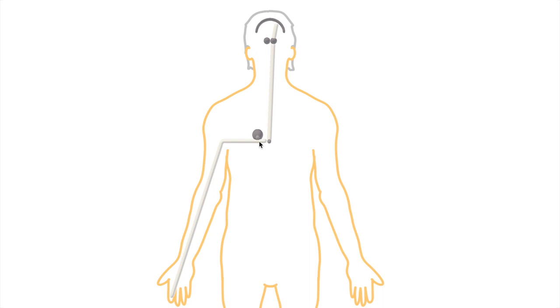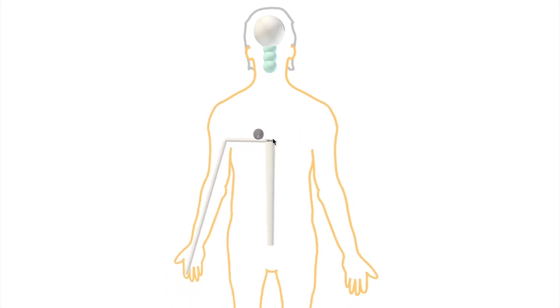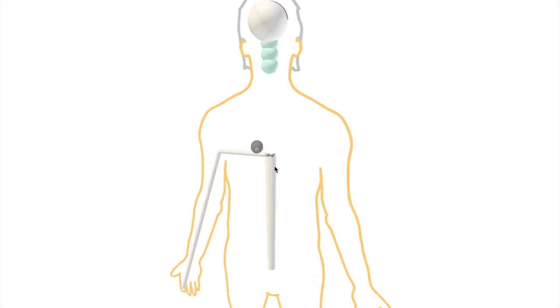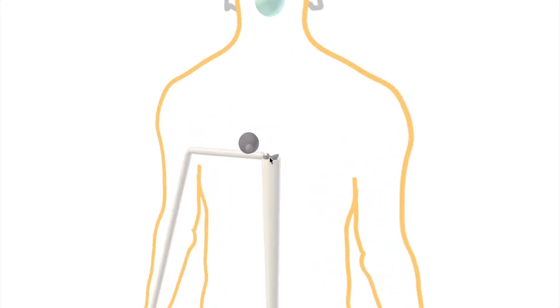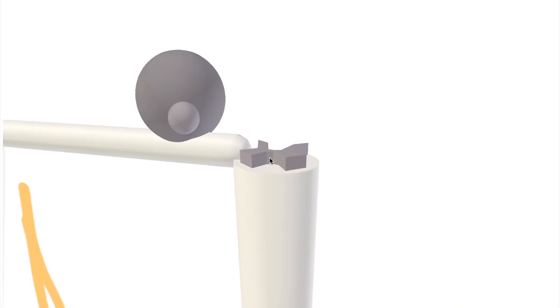Let's take the spinothalamic pathway first. That's the brain, brainstem, spinal cord. I'm going to cut away the spinal cord at the level that this nerve that we've been following enters. Let's say that's around T5, or the fifth thoracic spinal nerve.